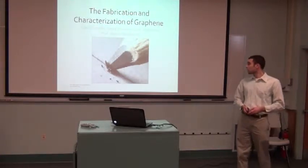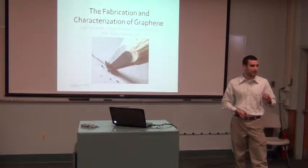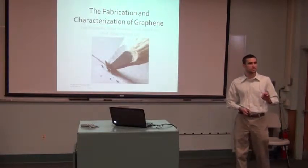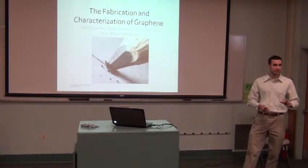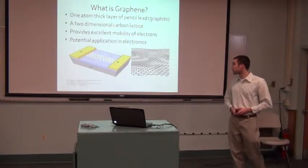If you could imagine that you could write so finely that you managed to scrape off just one single lattice off of this stack, then you would have what we call graphene, which is just a single atomic layer of this two-dimensional carbon lattice.